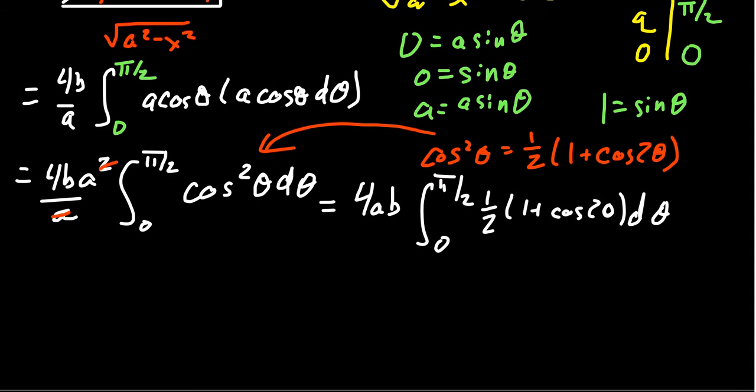That gives us 4ab, integrate from 0 to pi halves. Then we get one half times one plus cosine of 2 theta d theta. Notice the one half on the inside combines with the 4 on the outside, giving us 2. We're going to integrate the 1 and the cosine of 2 theta separately.